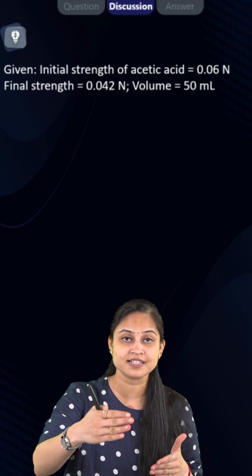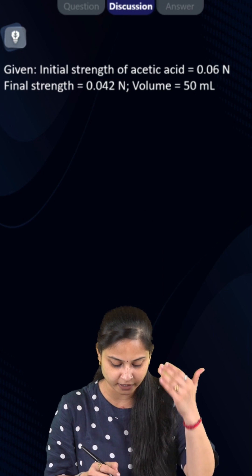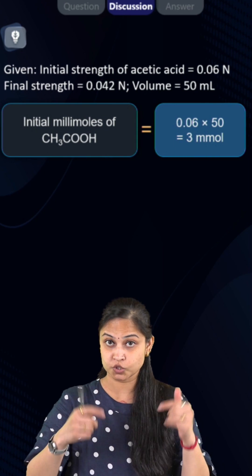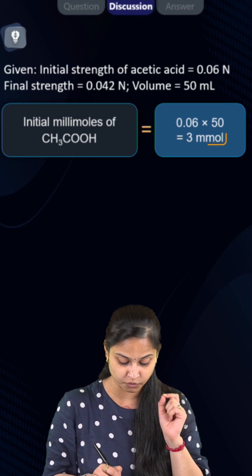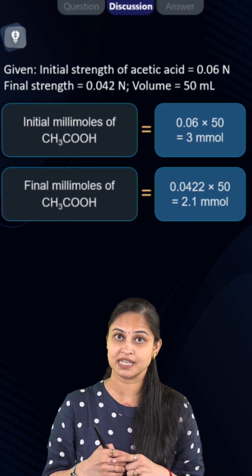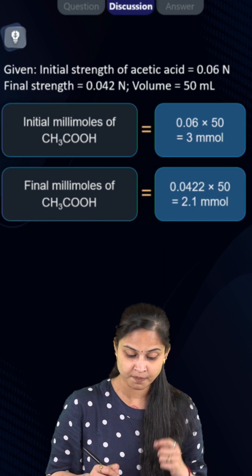Well, initial strength of acetic acid is equals to 0.06 normal, final strength is 0.042 normal, and the volume is equals to 50 mL. So initial millimoles of acetic acid will be equals to 3 millimoles. Final millimoles of acetic acid will be equals to 2.1 millimole.